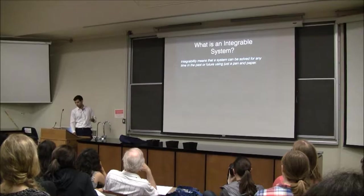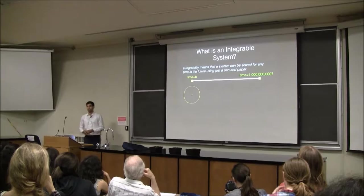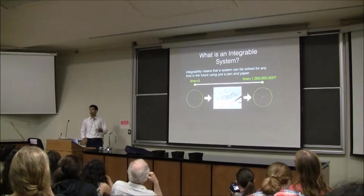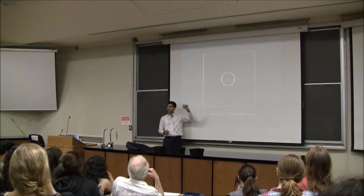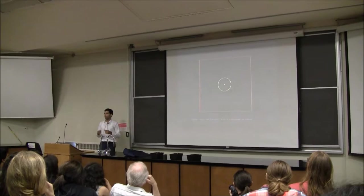Integrability means that a system can be solved for any time in the past or future just using a pen and paper. If we have a planet and a star at time equals zero and we want to know what it will be like in a billion years, we can solve Kepler's equations and figure out where the planet is going to be. You can see the planet going around — it looks almost like it's stuck on a wire, going round and round. Even at 4,000 years, nothing much is happening. You could figure out what it's going to look like in the future.